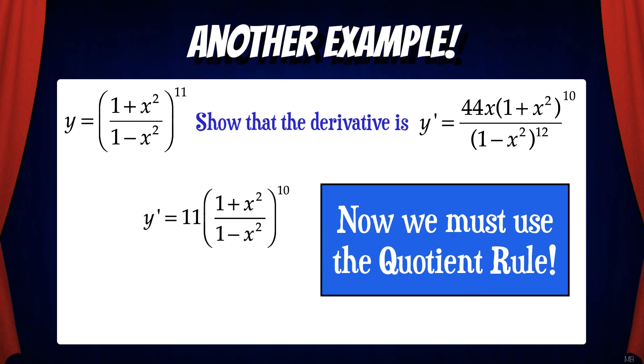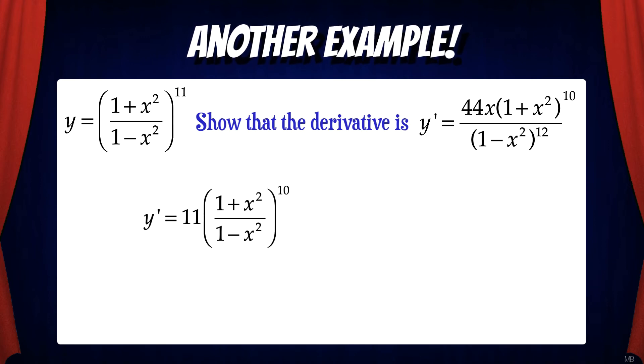So we're going to follow the pattern. Low d high minus high d low over the square of low we go. That gives us the quantity of 1 minus x squared times 2x minus the quantity of 1 plus x squared times negative 2x all over the quantity of 1 minus x squared squared. This is the correct derivative.